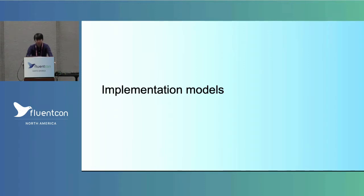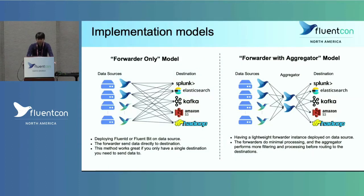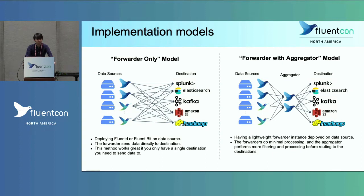Let me talk about implementation models before we move on to performance. We have two implementation models: a forwarder-only model and a forwarder-with-aggregator model. With the forwarder-only model, you deploy a FluentD or FluentBit instance on data sources, and the forwarder sends data directly to a destination like Splunk, Elastic, or Kafka. With the forwarder-with-aggregator model, we bring an aggregator between data sources and destinations. We deploy a lightweight forwarder instance on the endpoint, and the endpoint sends messages to the aggregator, which performs data processing tasks like parsing original messages and filtering out unnecessary messages.